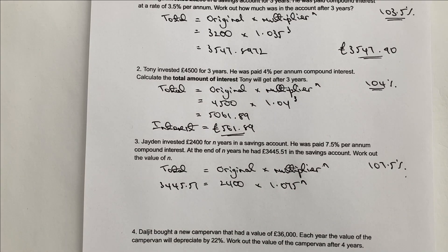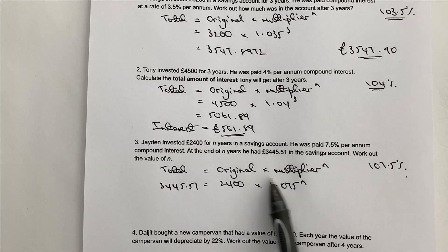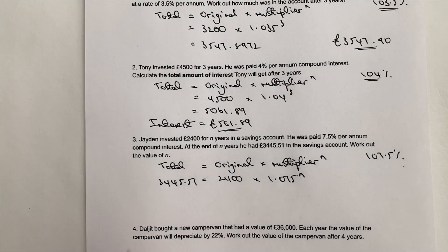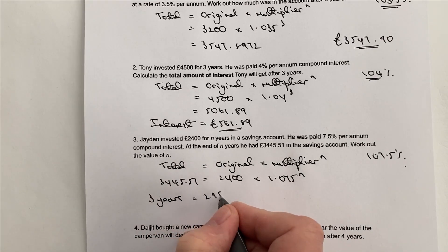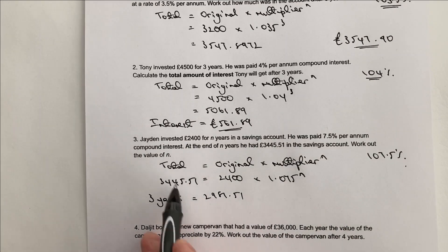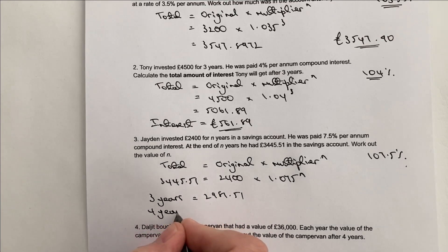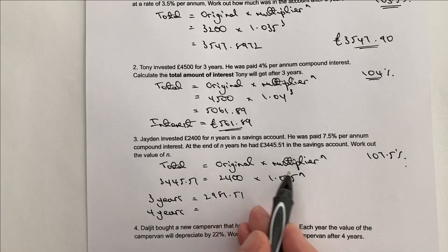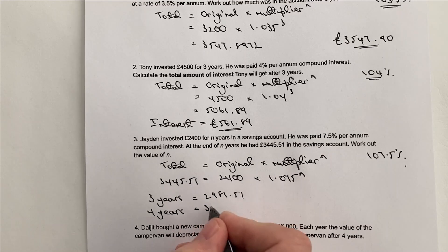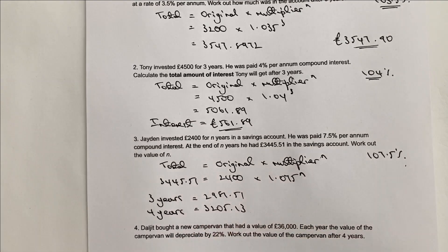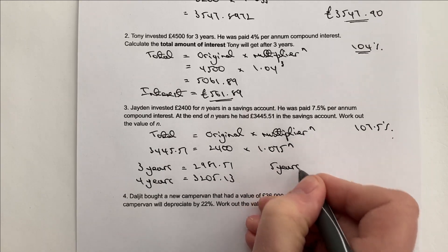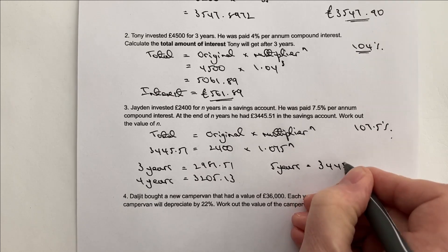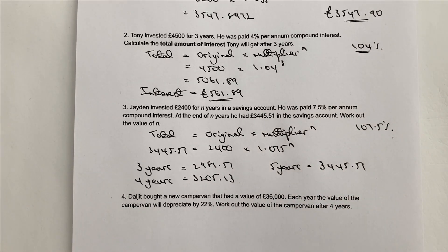It's just a case of trial and error. If I put three into here and perform this calculation, I'm working it out over three years, and over three years I get a total of £2,981.51 — that's not close enough. So let's have a look at four years: performing the calculation with four years gives £3,205.13 — not quite close enough. But as soon as I put in five years, I get exactly £3,445.51. Therefore, he must have left his money in the account for five years, and that would be the value of N.